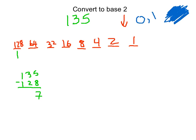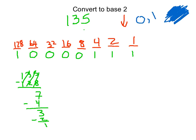By putting that 1 in the 128s column, we now need to put 0s and 1s in the remaining columns to represent 7. How many times does 64 go into 7? That's going to happen 0 times. Same thing with 32, 16, and 8 — we put 0s in all these columns because putting a 1 in any of them would exceed 7. How many times does 4 go into 7? That goes in once. We take 4 away, leaving 3. Then 2 goes into 3 once, leaving 1, and 1 goes in once, leaving 0.